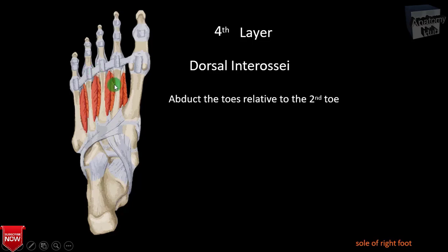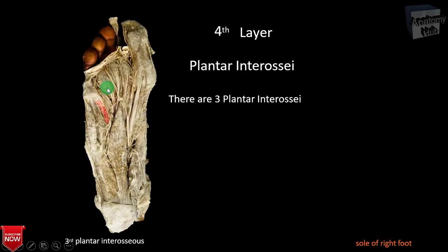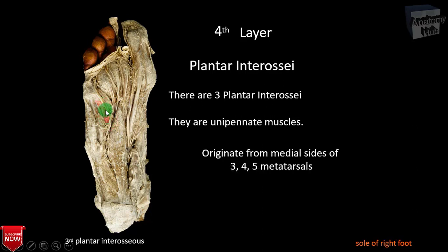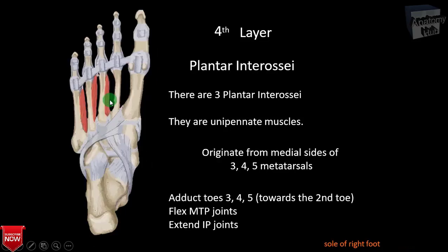There are three plantar interossei, which are unipennate muscles. They originate from the medial side of the third, fourth, and fifth metatarsal bones. When they contract, they adduct the third, fourth, and fifth toes towards the second toe. They also flex the metatarsophalangeal joints and extend the interphalangeal joints.